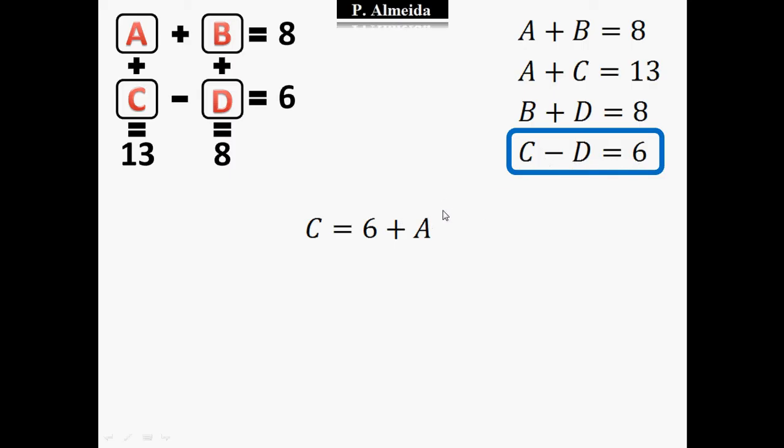But I know that D equals A. So I'm going to use that equation. And I know that A and D are 3.5. So C is going to be equal to 6 plus 3.5, which gives me 9.5. So I already have 3 numbers out of 4.